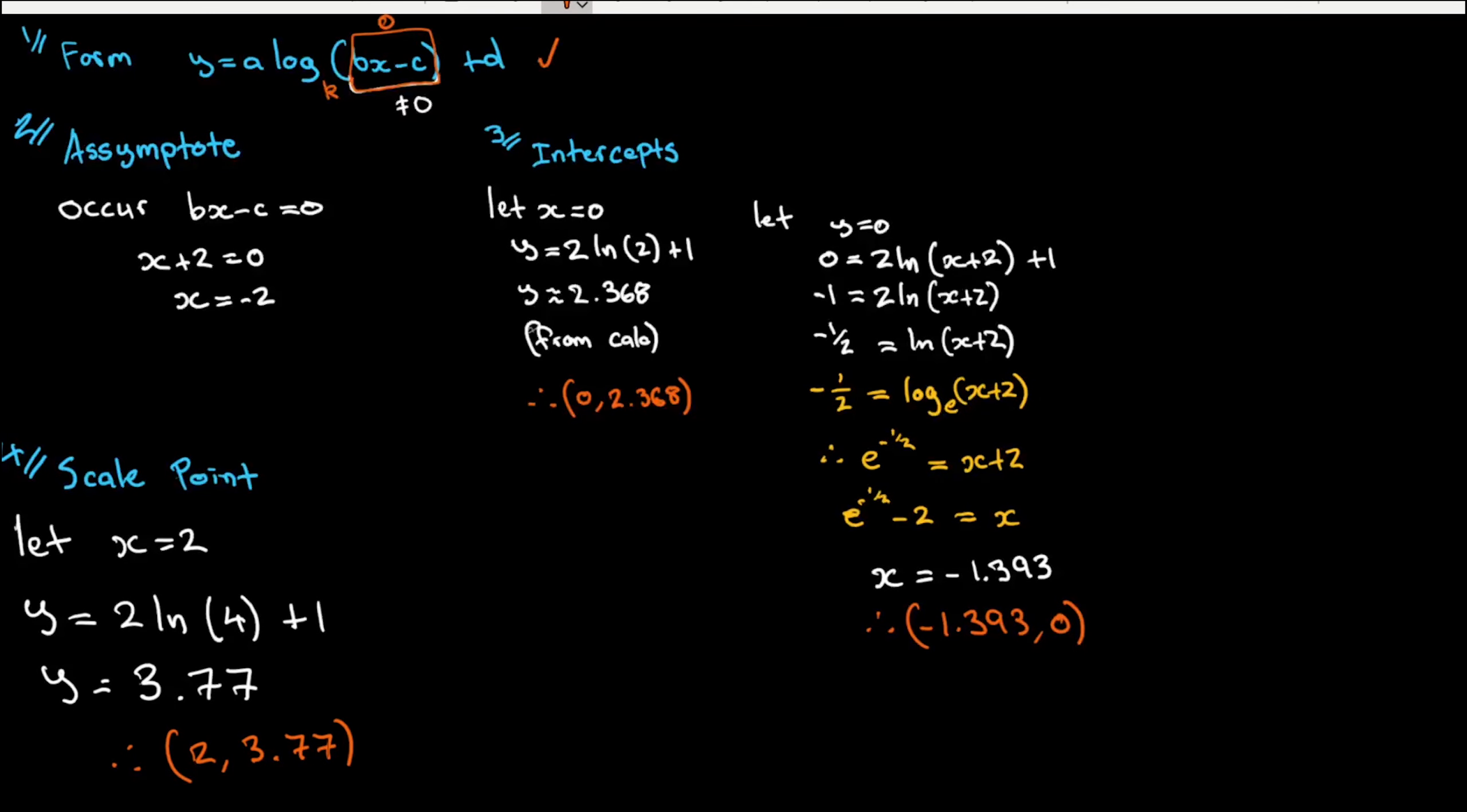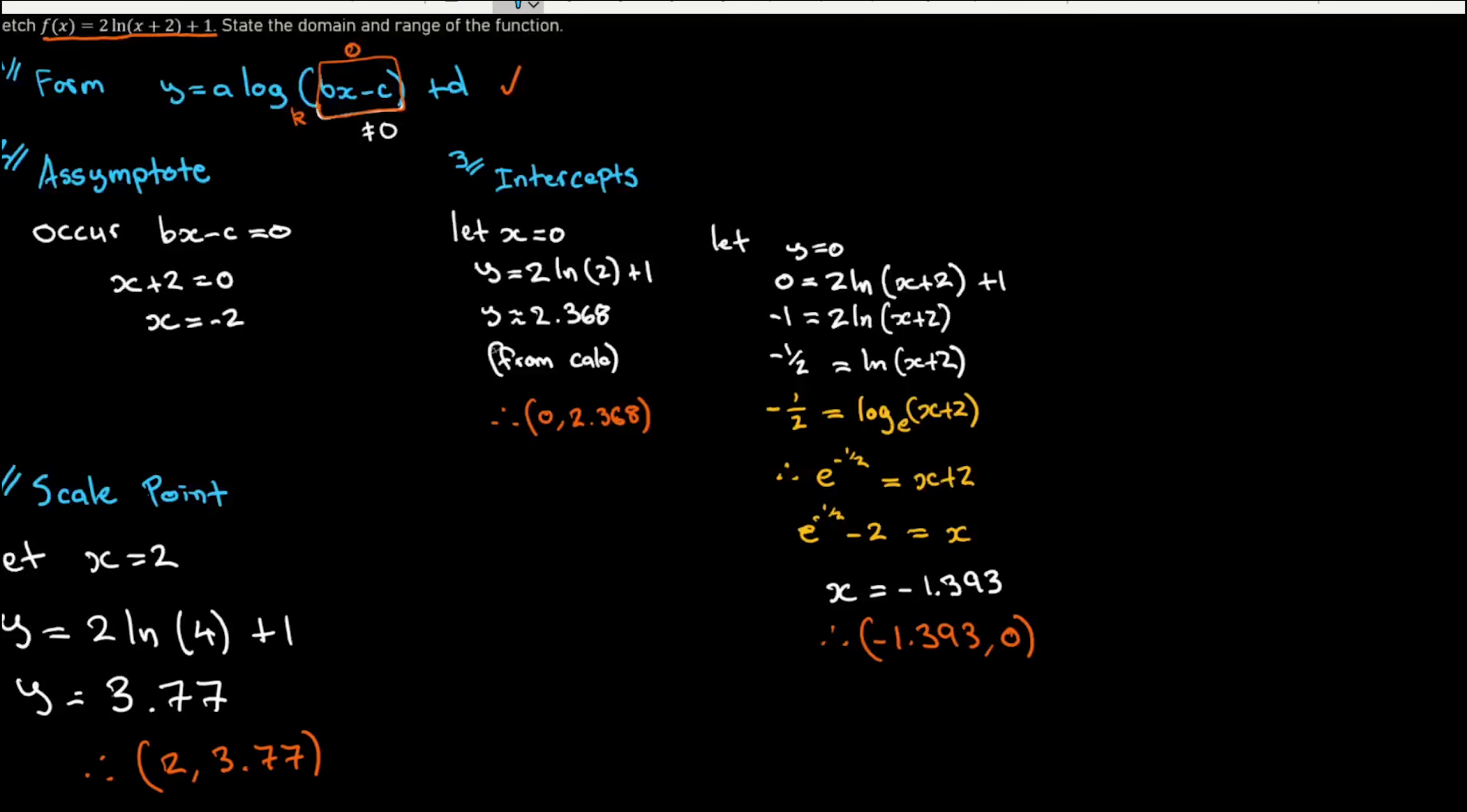I've got my scale point there, which is when x equals two, y is 3.77. Again, I'll just use a calculator to simplify that out. The last thing I need to do is verify my shape. My working is getting a little bit all over the place here, so I'm just going to do it small here.